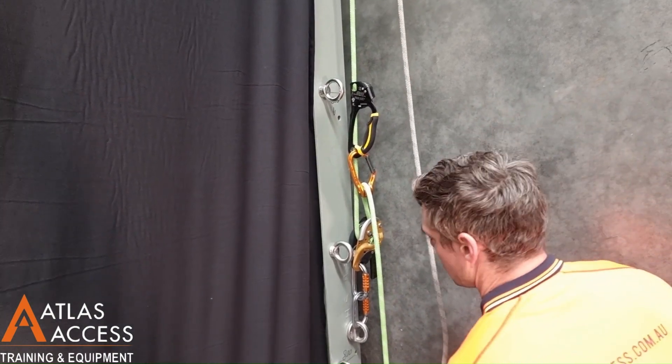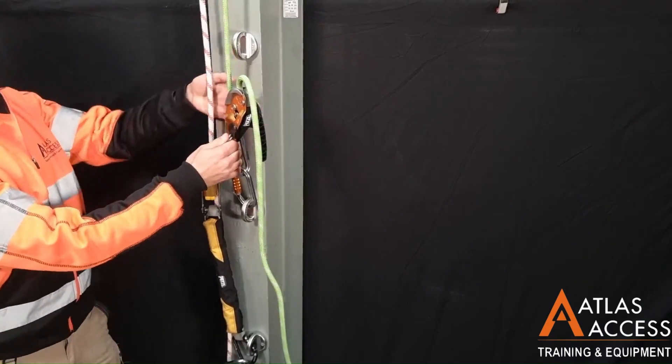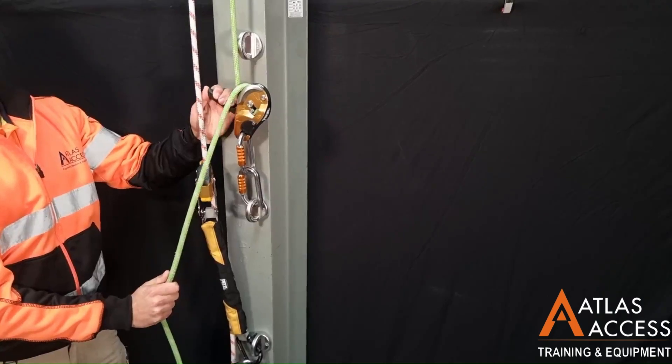Pull the slack through the backup line regularly. When lowering, wrap the rope over the side of the device for extra friction and hold the tail.